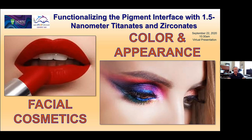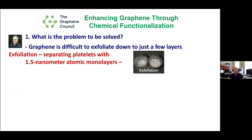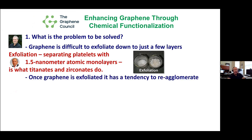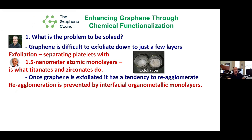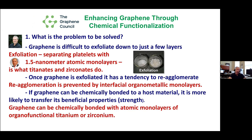So as Terence said, what is the problem? Graphene is difficult to exfoliate down to a few layers. Exfoliation — separating platelets with 1.5-nanometer atomic monolayers — is what titanates and zirconates do. Once graphene is exfoliated, it has a tendency to re-agglomerate; re-agglomeration is prevented by interfacial organometallic monolayers. If graphene can be chemically bonded to a host material, it's more likely to transfer its beneficial properties — graphene can be chemically bonded with atomic monolayers of organofunctional titanium or zirconium.